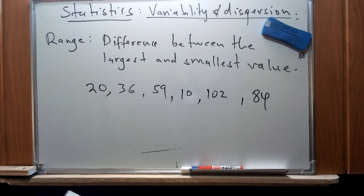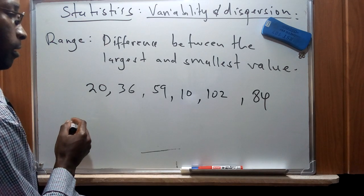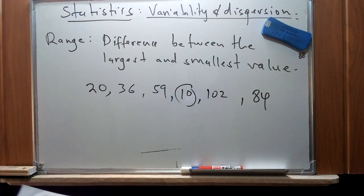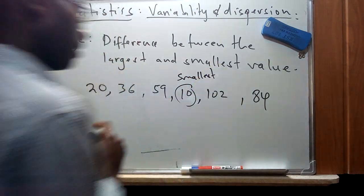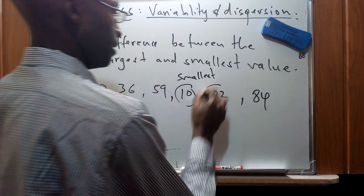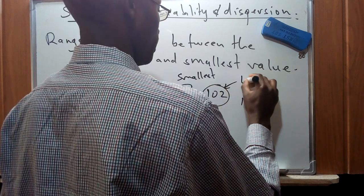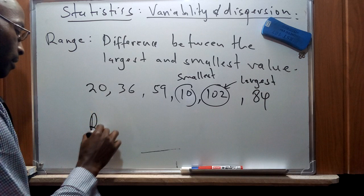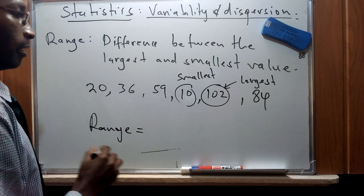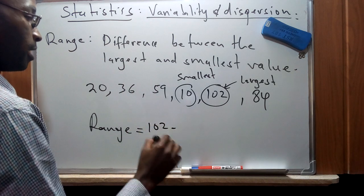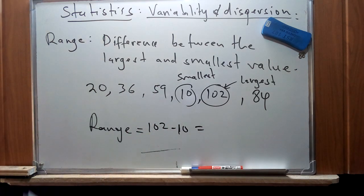We have defined range as the difference between the largest value and the smallest value for this set of data. So we identify that 10 is the smallest value and 102 is the largest value. Therefore, the range from this set of data is 102 minus 10, which gives us 92.